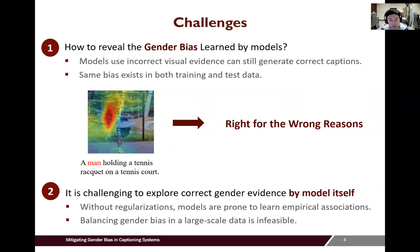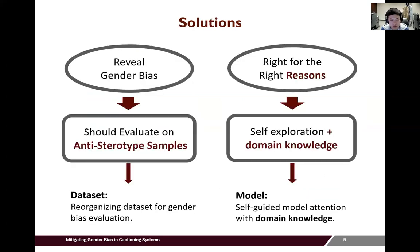To overcome unwanted bias, a straightforward solution is to train the model on a debiased dataset. However, we emphasize that balancing gender bias in a large-scale dataset is almost infeasible. So to reveal gender bias, we present a new split called the CocoGB dataset. The dataset is created by reorganizing the data distribution such that for each gender, the distribution of image context is very different between the train and the test set. Our hypothesis is that models relying on image context for gender identification will suffer from a huge gender prediction error on the anti-stereotypical test dataset.